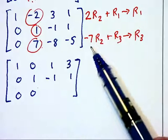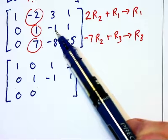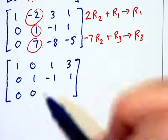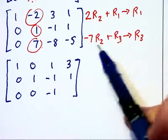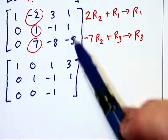Now -7 times -1, that's 7, plus this -8 makes -1.